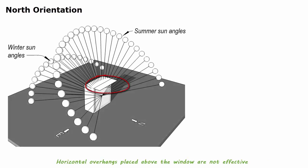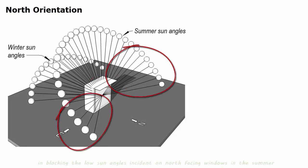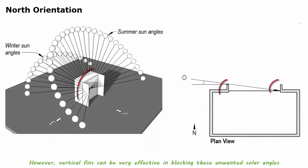Horizontal overhangs placed above the window are not effective in blocking the low sun angles incident on north-facing windows in the summer. However, vertical fins can be very effective in blocking these unwanted solar angles.